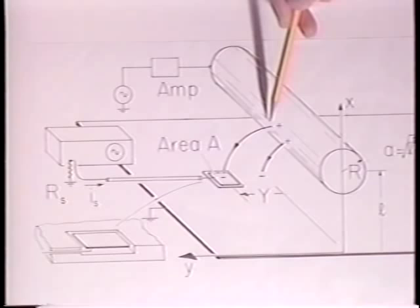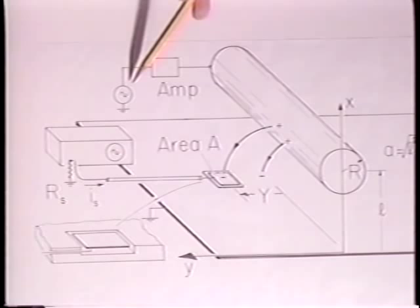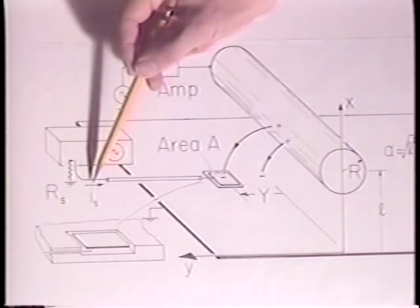Conservation of charge requires that the probe current be the time rate of change of the charge on the probe surface. It follows that the voltage induced across the internal resistance of the scope is proportional to the rate of change of the applied voltage.